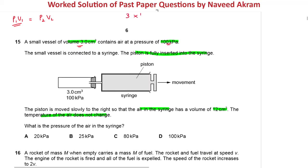The piston is fully inserted into the syringe, so there is no air in the syringe at this time. Now the piston is moved slowly to the right.